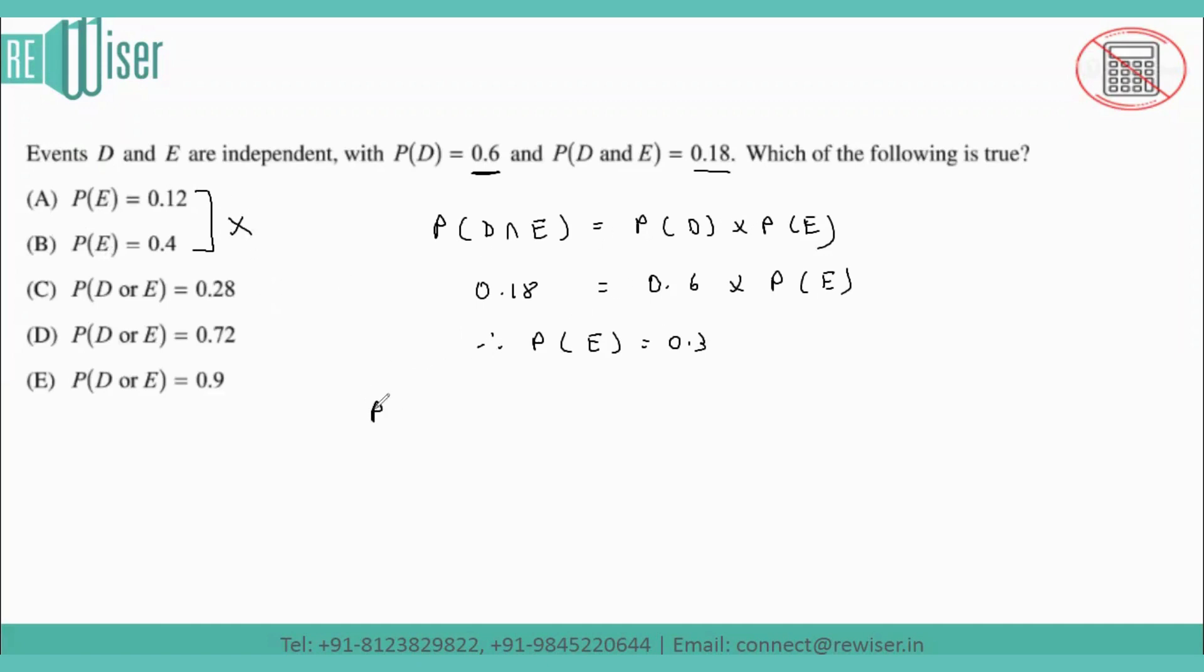Now moving on to the identity that P of A union B is given as P of A plus P of B minus P of A intersection B. So if I apply this formula over here, if I'm writing P of D union E, that should be equal to probability of D plus probability of E minus the probability of D intersection E.